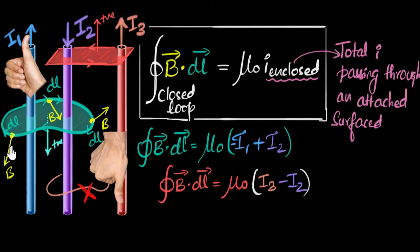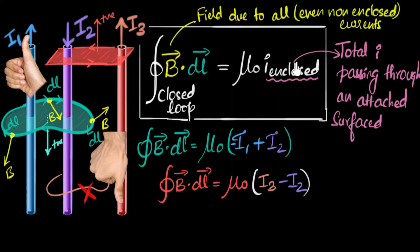That is the total magnetic field. So the magnetic field which we are considering is due to all the currents, enclosed and non-enclosed. So how does that work? Why is it on one side, we have total field, but on the other side, only the enclosed one matters?